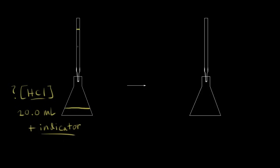Up here we're going to have our standard solution — a known concentration of sodium hydroxide. Let's say we have a solution of sodium hydroxide, and the concentration is 0.100 molar. And we're ready to start our titration.